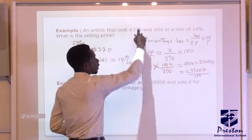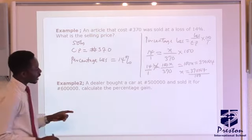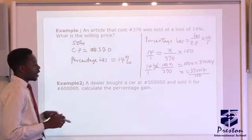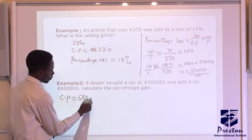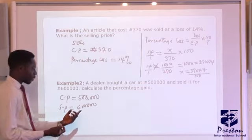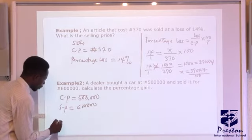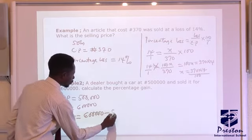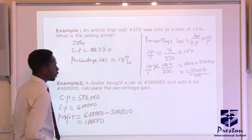Looking at example 2: a dealer bought a car at 500,000 and sold it for 600,000. The cost price of the car is 500,000, while the selling price is 600,000. At this point, the selling price is higher than the cost price, so the dealer has made a profit. Profit equals 600,000 minus 500,000, which gives us 100,000 as our profit.